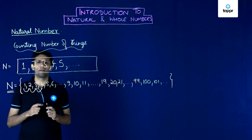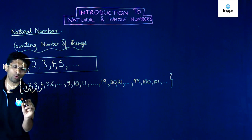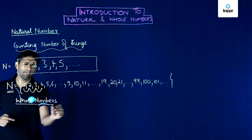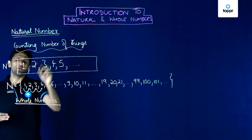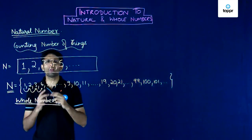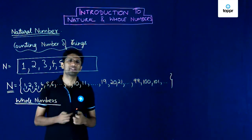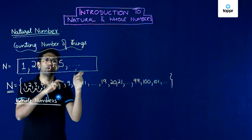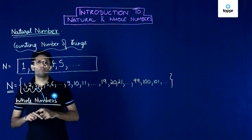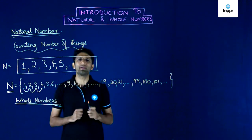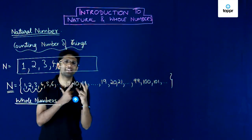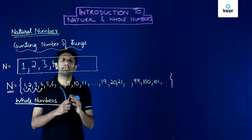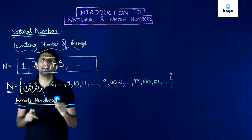The next concept we are going to see is whole numbers. If we are talking about the number of persons in a given room, we saw there can be 1, 2, 3, 4, or 5 persons. But if there is no single person in the room — that is the room is empty or vacant — we say the number of persons is 0. Now 0 is a number that implies nothingness or absence of something. And whenever we include 0 in this list, we get a list of whole numbers.